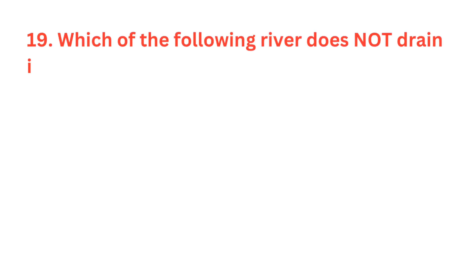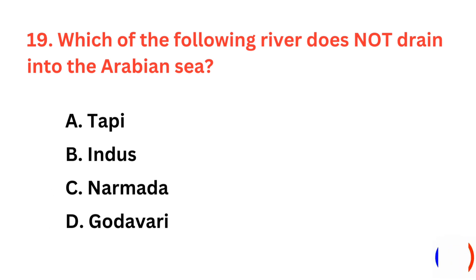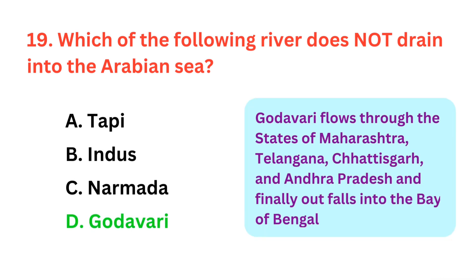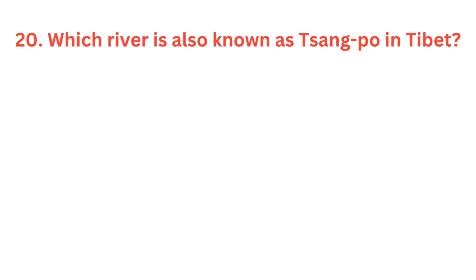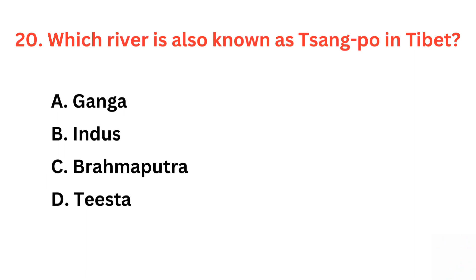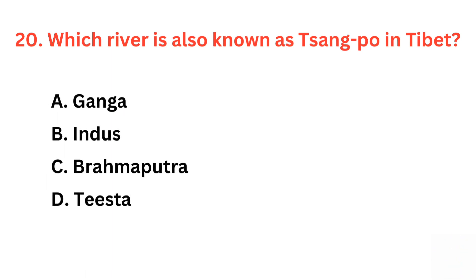Which of the following rivers does not drain into the Arabian Sea? The correct answer is option D, Godavari. Which river is also known as Sangpo in Tibet? The correct answer is option C, Brahmaputra.